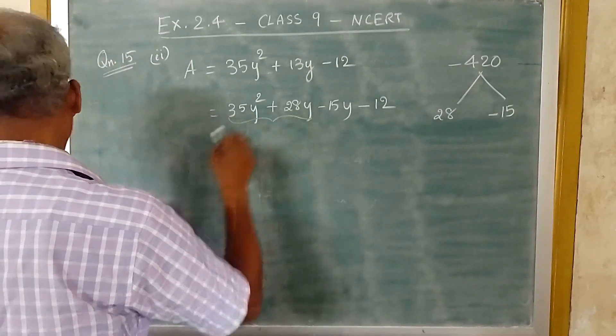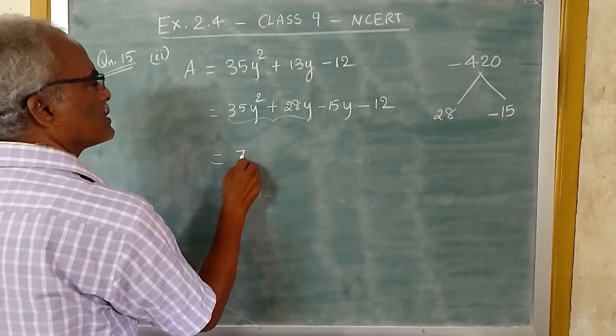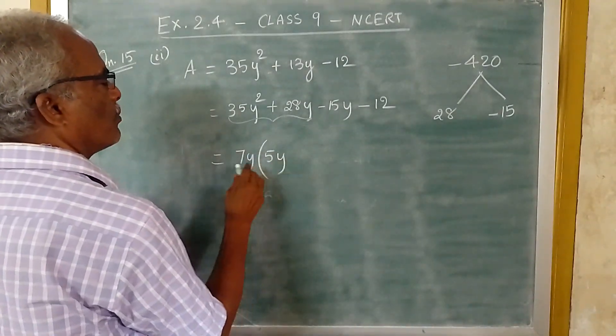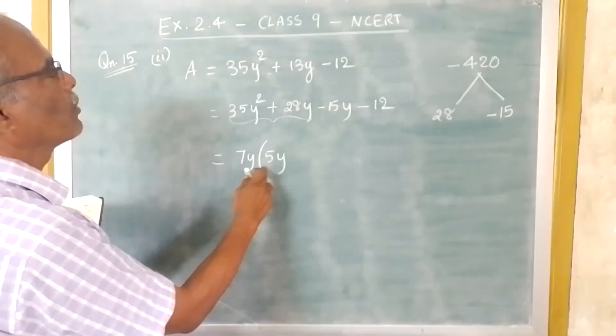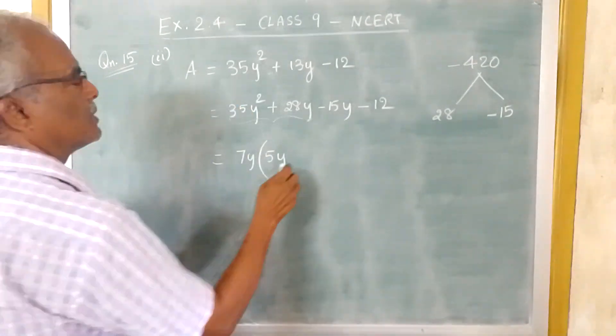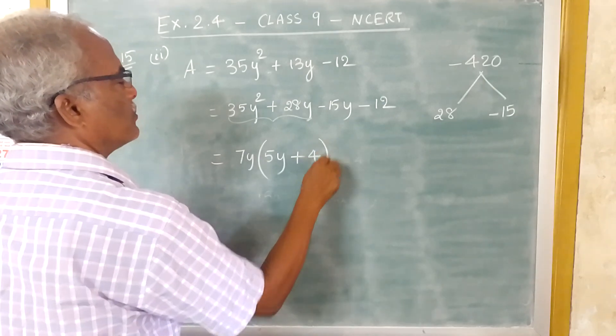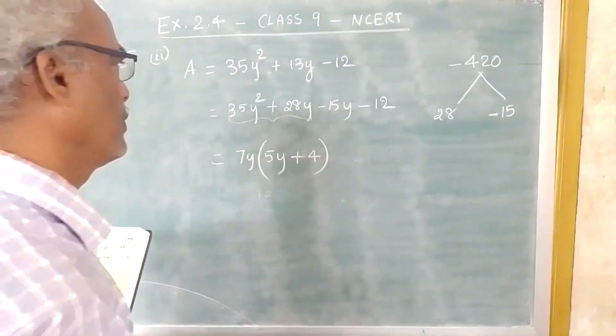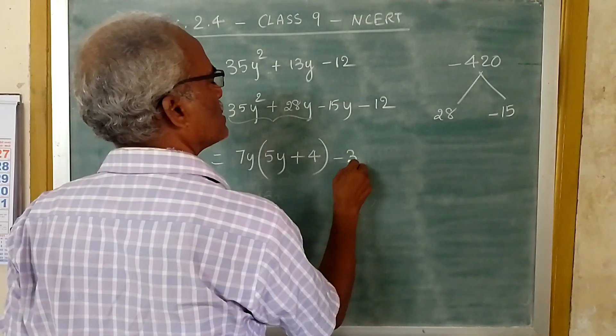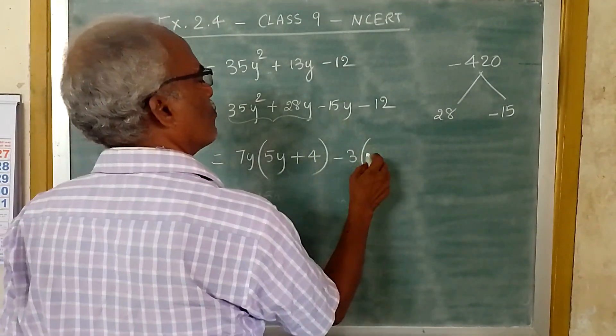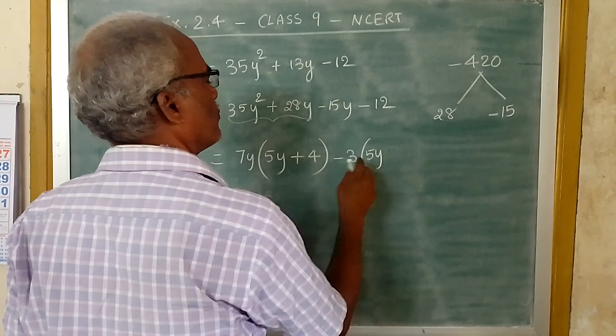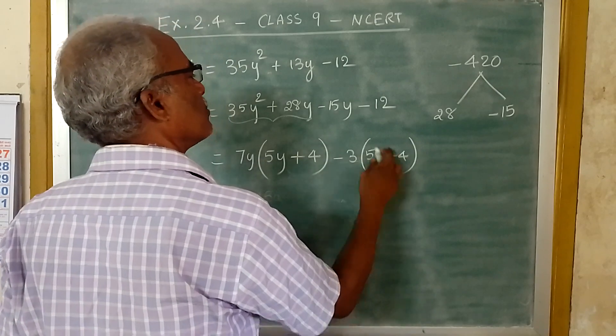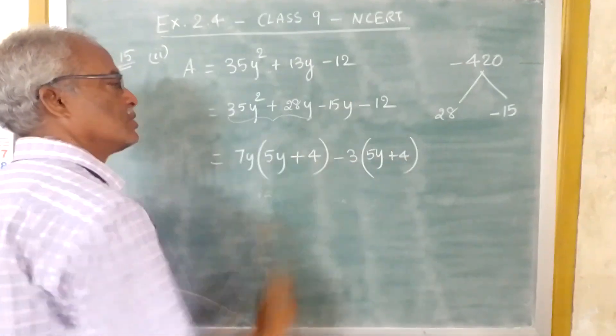In this, you can take 7Y as the common term. So here you will be having 5Y plus 4, because 7Y into 5Y is 35Y square and 7Y into 4 is 28Y. The next will be minus 3, because 5 times 3 is 15, minus 15Y plus 4. Because minus into plus minus, 4 into 3 is 12.